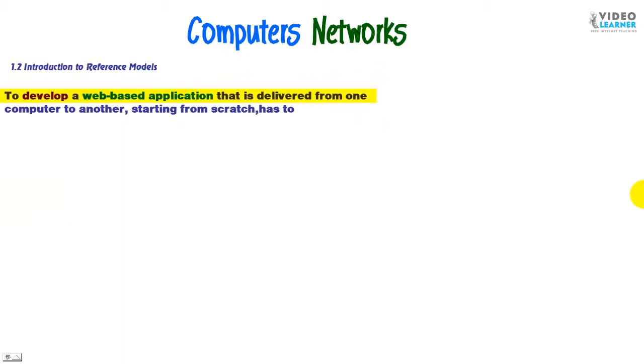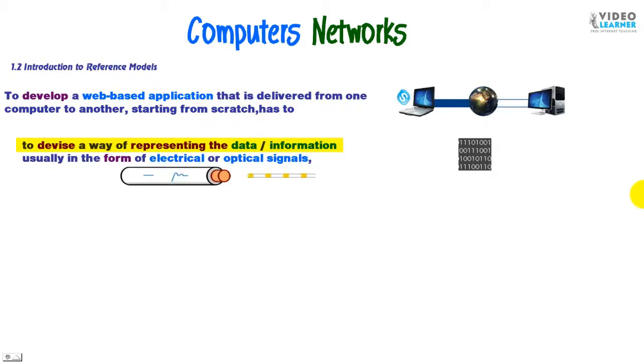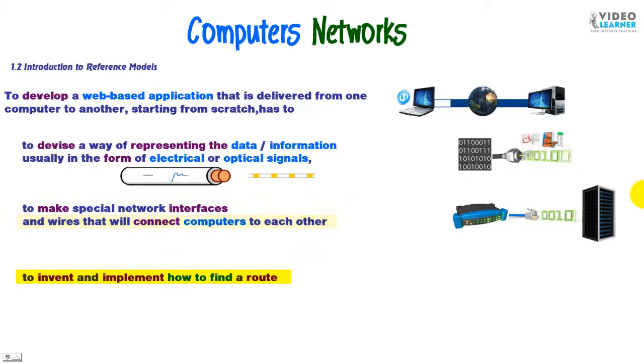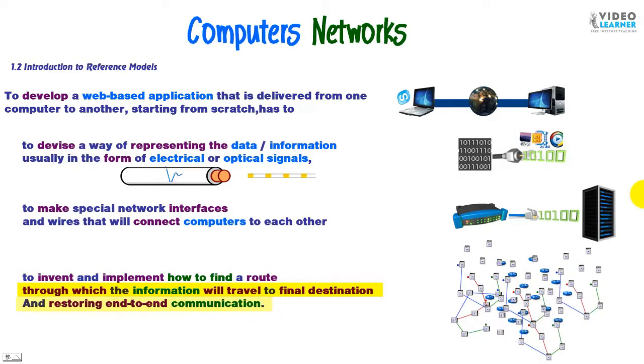In order to develop a web-based application that is delivered from one computer to another, starting from scratch, one has to devise a way of representing the data or information, usually in the form of electrical or optical signals, to make special network interfaces and wires that will connect computers to each other, to invent and implement how to find a route through which the information will travel to final destination and restore end-to-end communication.